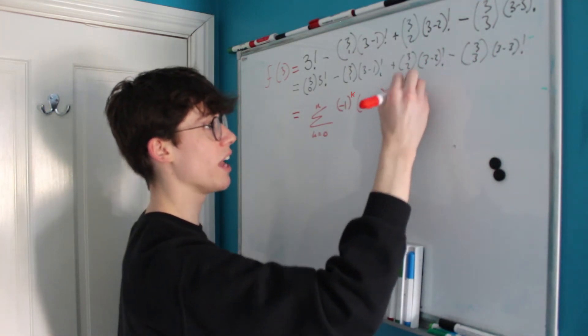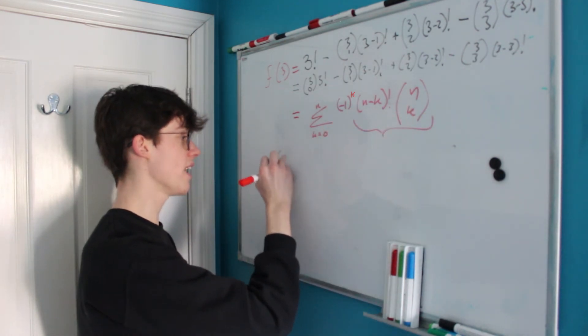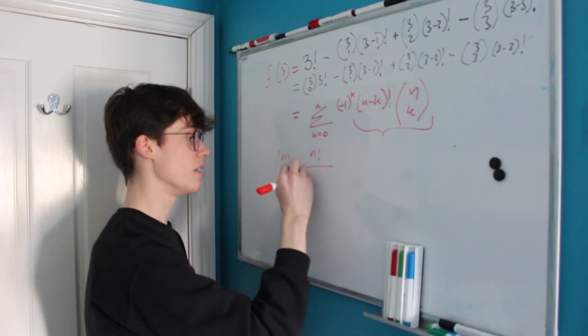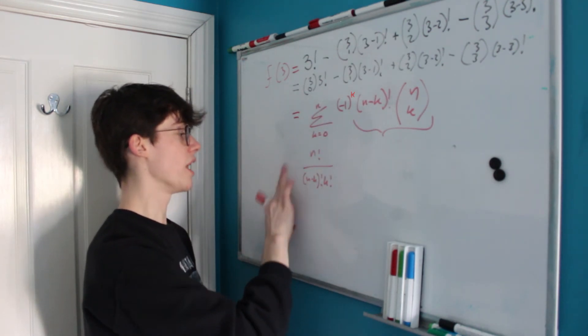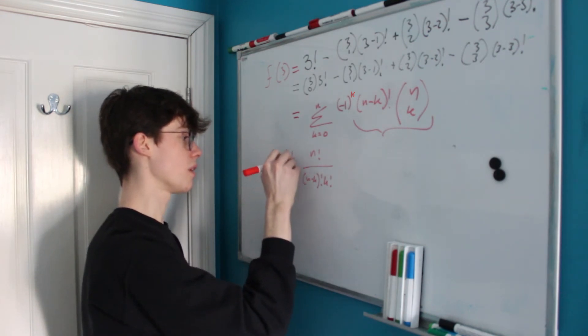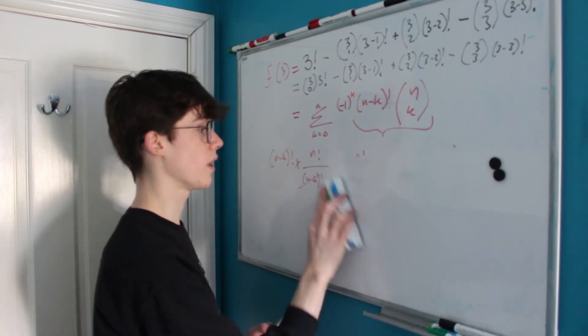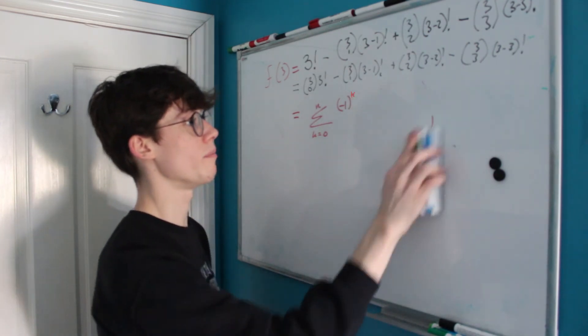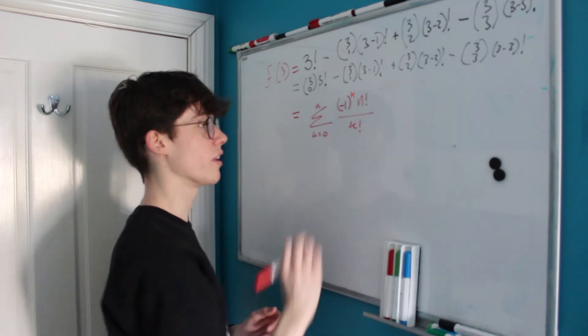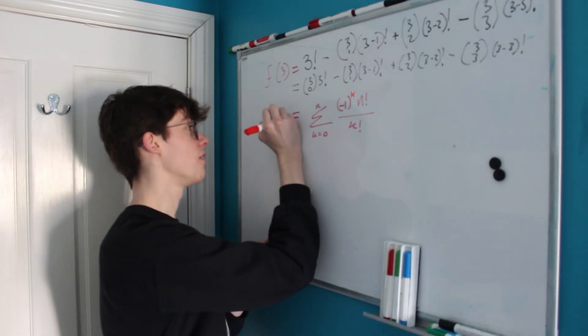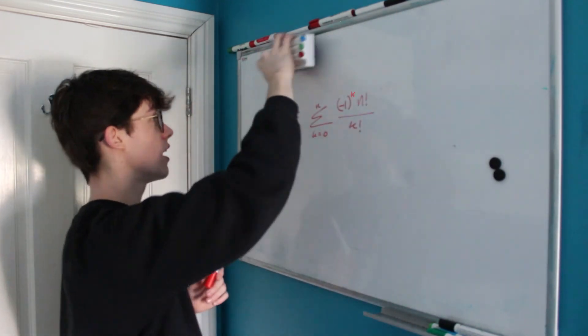We've also got an n minus k factorial and we've got an n choose k as binomial coefficient there. Now let's see if we can simplify this because we know that n choose k is equal to n factorial divided by n minus k factorial times k factorial and we're multiplying this by n minus k factorial which means we have a nice cancellation there and we get left with just n factorial over k factorial. So the simplest and nicest way that we can write this sum is as negative one to the k times n factorial all over k factorial and this is our f of n and it's actually called the subfactorial and we denote it like so with the exclamation mark before the n.